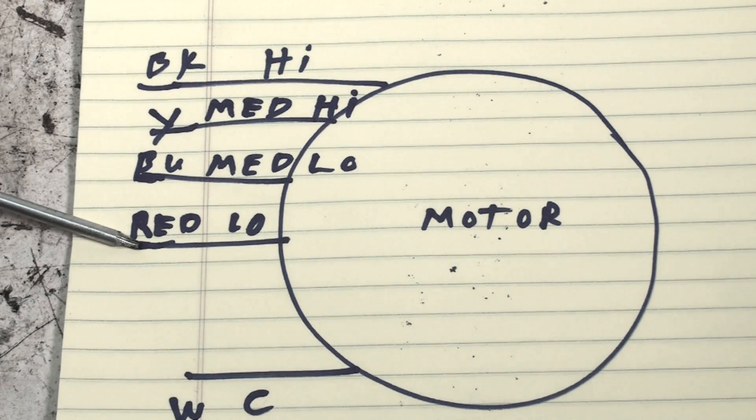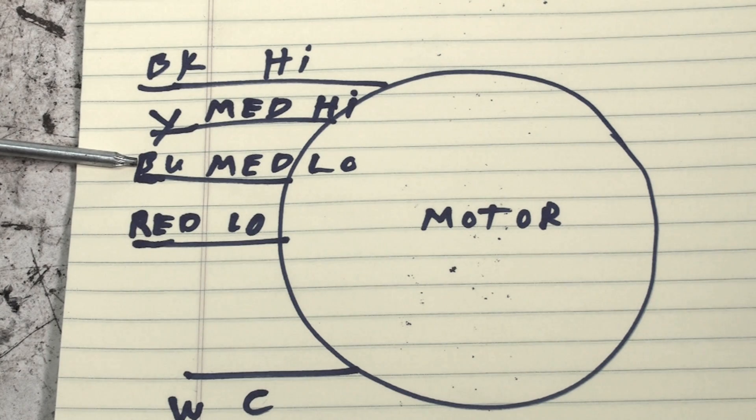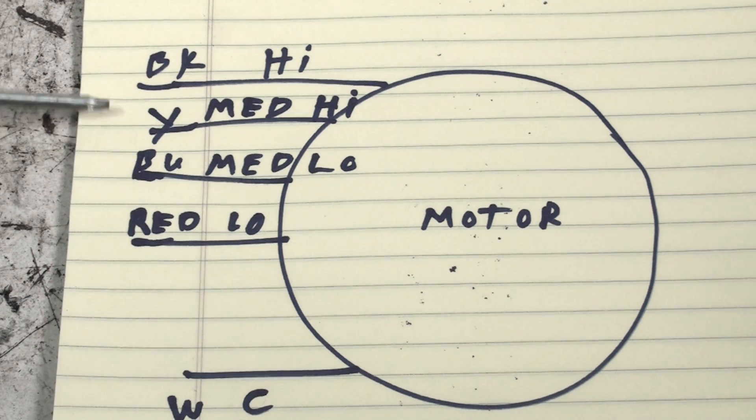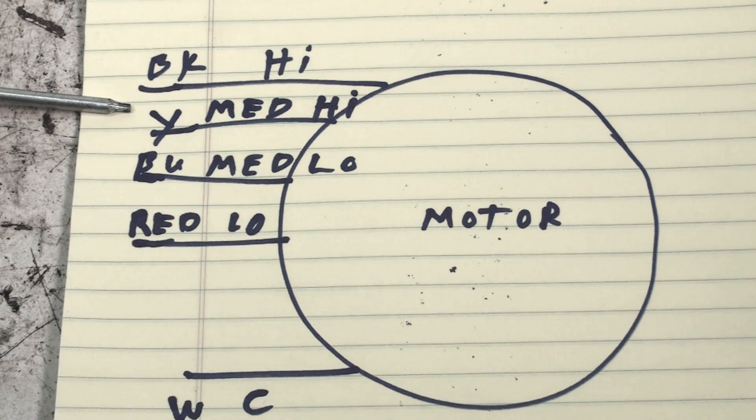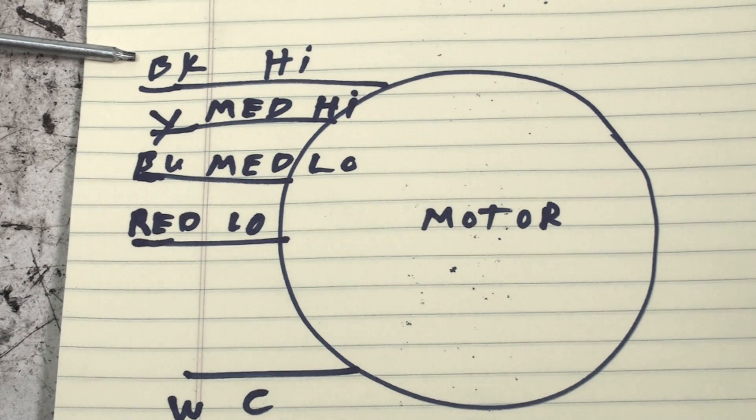We have red which is low speed, blue is medium-low, yellow is medium-high, and black is hot. Now most of them are that way. I won't say everything's that way.